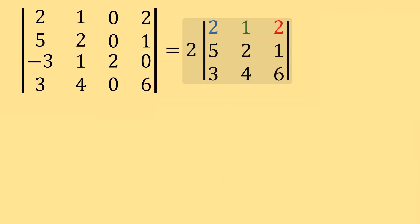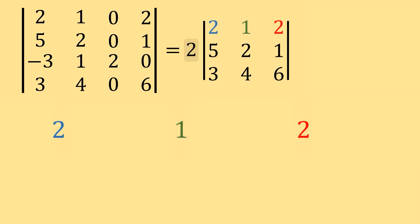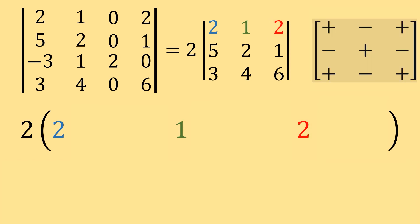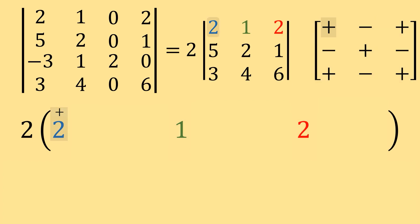Since there are no zeros in any of these positions, I'll just work with row 1 again. Let's bring the row 1 values down. Remember, we have 2 times this determinant — so whatever we get, we multiply by 2. I'll put 2 on the outside and bring down the 2, 1, and 2. Next, we use the sign chart to assign signs to this row. Since we used row 1 again, we use the top row of the sign chart: positive sign with the first 2 — that stays 2; negative sign with the 1 — so that's minus 1; and positive sign with the other 2 — so positive 2.